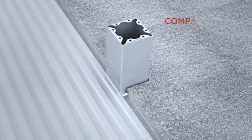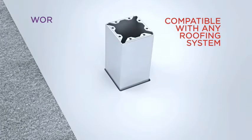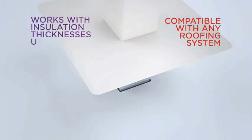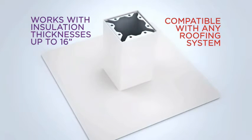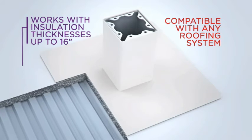Insulation, roofing, and flashings are installed next. Roof screen attachments are compatible with any type of roofing system and can accommodate insulation thicknesses up to 16 inches.